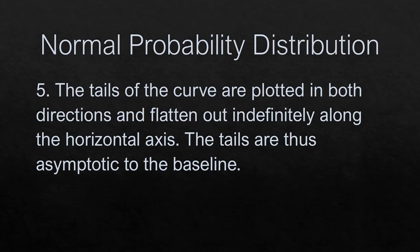The fifth characteristic of normal probability distribution or normal curve: the tails of the curve are plotted in both direction and flattened out indefinitely along the horizontal axis. The tails are thus asymptotic to the baseline.